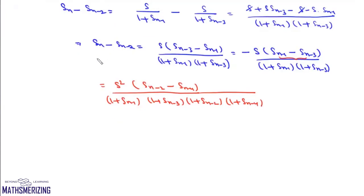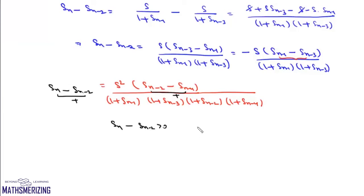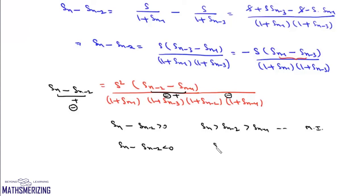Now if we look at this result for SN minus SN minus 2: if this expression is positive, then SN minus SN minus 4, SN minus SN minus 6 will also be positive. In that case SN is greater than SN minus 2, which is greater than SN minus 4 — this subsequence is monotonically increasing. If the expression is negative, then all terms will be negative, so SN is less than SN minus 2, making this subsequence monotonically decreasing.